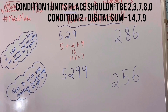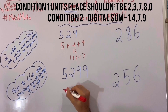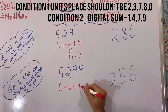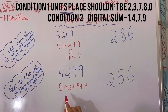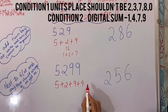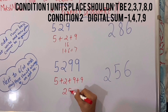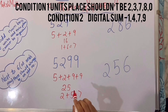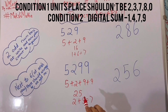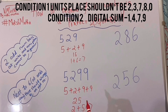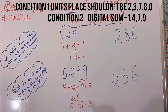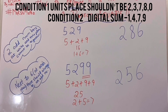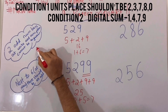Now let's take 5299. The digital sum: 5 plus 2 plus 9 plus 9. 5 plus 2 is 7, 7 plus 9 is 16, 16 plus 9 is 25, and again 2 plus 5 is 7. The digital sum is 7, but note that two odd numbers can never be together even if the digital sum is 1, 4, 7, or 9. I have written it here.